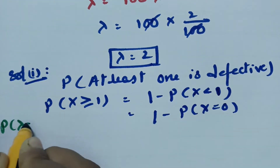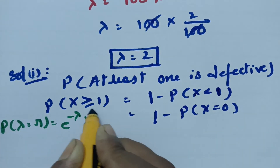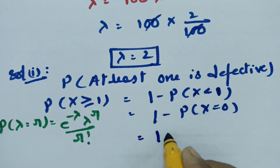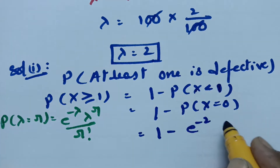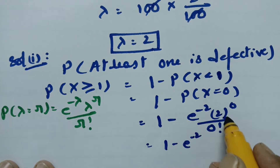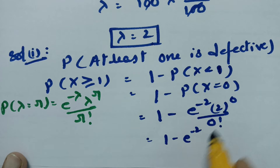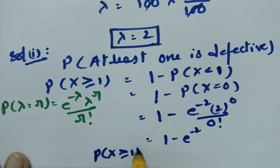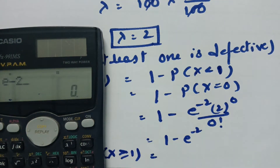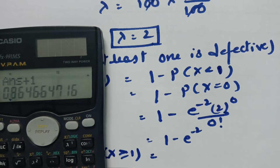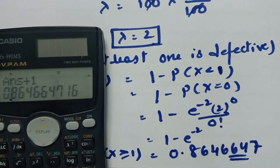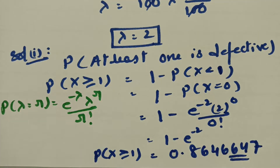According to the Poisson distribution formula: P(X=r) = e power minus lambda, lambda power r by r factorial. Here lambda is equal to 2 and r is equal to 0. That is 1 minus e power minus 2, times 2 power 0 by 0 factorial. Anything to the power of 0 is 1 and 0 factorial is also 1. So the probability of x greater than or equal to 1 equals 1 minus e power minus 2, giving the value 0.8646647.